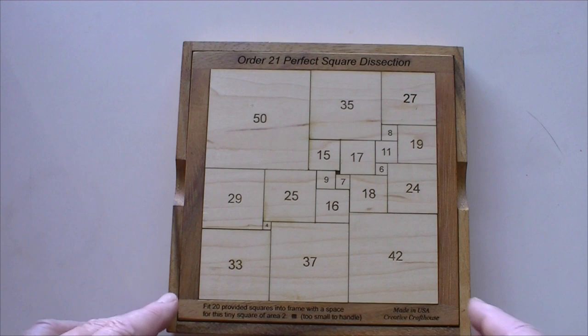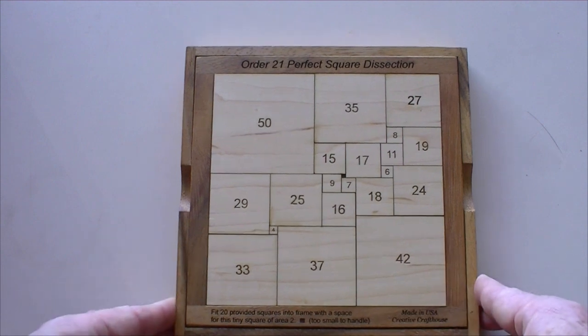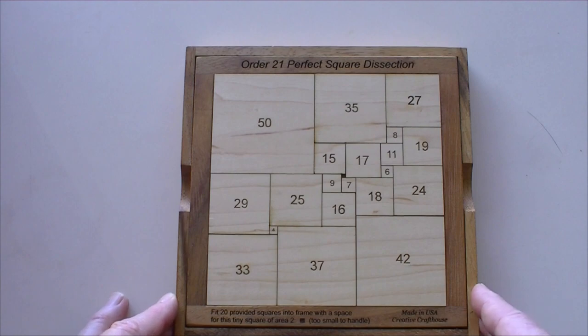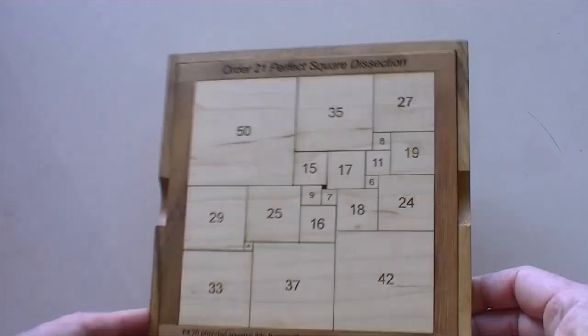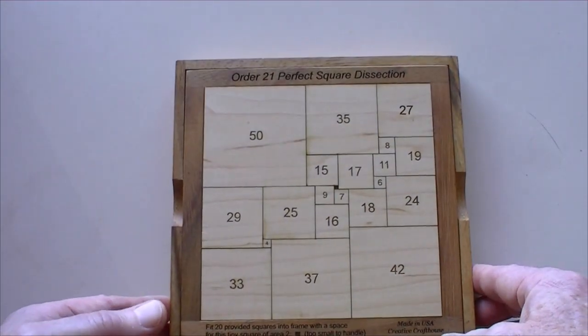We do a lot of work with circle packing, by the way, and this just caught my attention as kind of a cousin of that. I find it very interesting. There's a ton of stuff on the internet. Just do a search under perfect square dissections and you can read a lot about it if you're into the mathematics of it all.